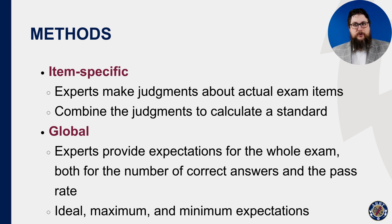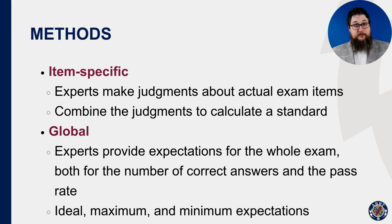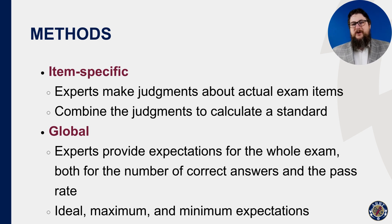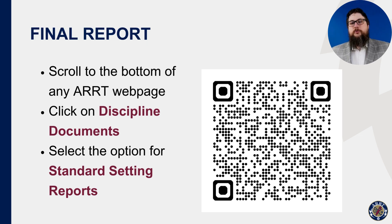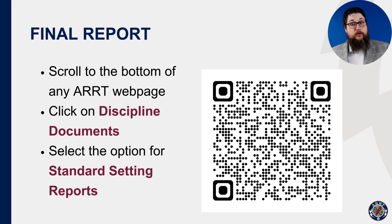Global methods take a different approach. Here, we might ask: what is your ideal percent-correct threshold for the exam? How high or low are you willing to deviate from that? Although there are fewer data points than the item-specific methods, these global methods provide valuable guardrails for the process overall. For example, would the public be okay with an exam standard that means only 60% would pass on their first attempt? How about 40%? If you want to read more about standard setting, please follow the instructions on screen to navigate to our published reports, or scan the QR code on screen.